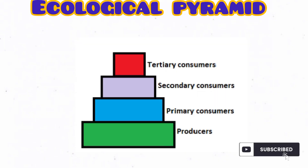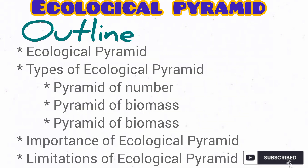Welcome to Science Access. In today's class, we'll be talking about ecological pyramid and we'll be following this outline: what is ecological pyramid, types of ecological pyramid. We'll talk about the pyramid of numbers, pyramid of biomass and pyramid of energy. We'll also talk about the importance of ecological pyramid as well as the limitations of the studies of ecological pyramids.